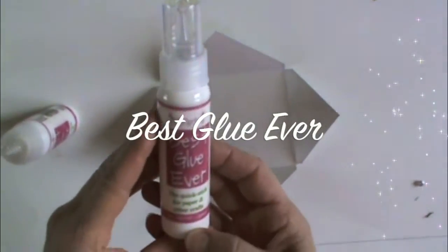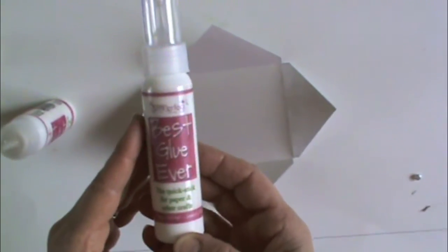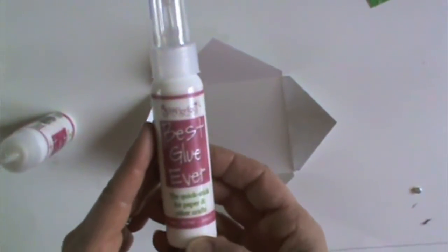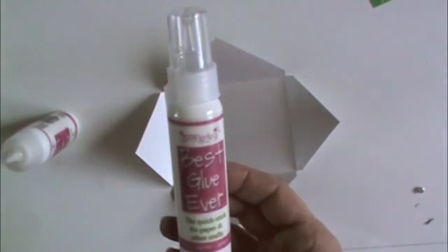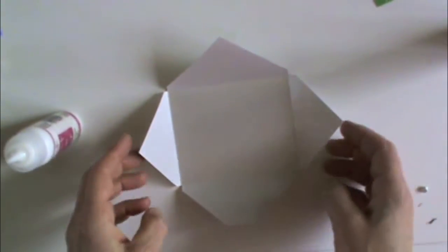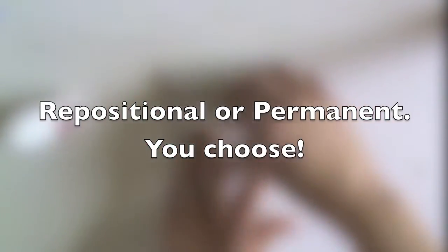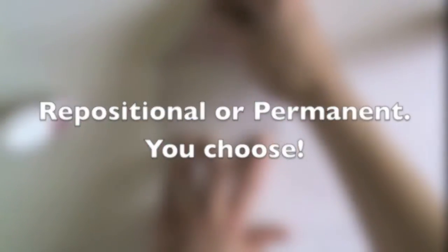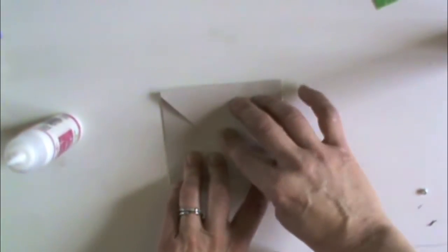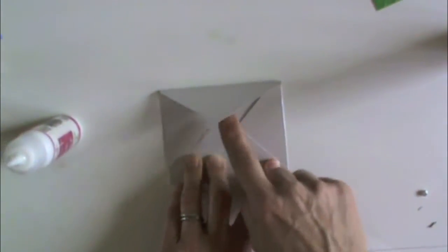There are many reasons why this glue lives up to its name and it truly is the best glue ever. This video will highlight one. The best glue ever is both repositionable and permanent. Depending upon your need, let it dry to clear and it will be repositionable, or adhere while wet for a fast strong bond.